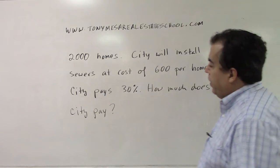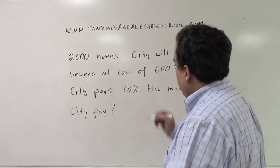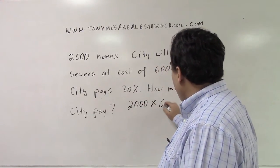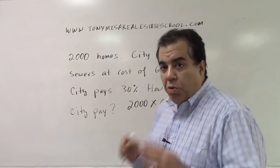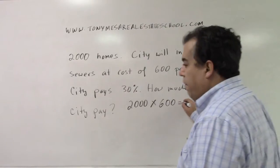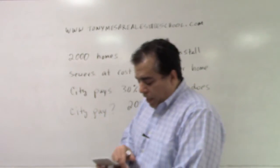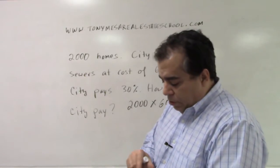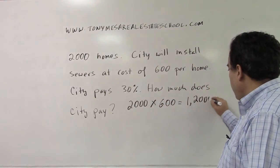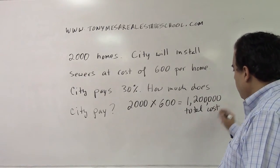We have 2,000 homes, and we're going to take that 2,000 homes and multiply it by the cost to install a sewer for each house — $600. So we have 2,000 multiplied by $600. That gives us $1,200,000. That is the total cost.